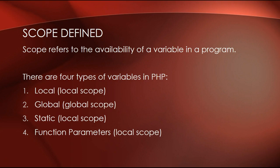There are four types of variables in PHP. There's local which has local scope, global has global scope, static variables have local scope, and function parameters also have local scope.